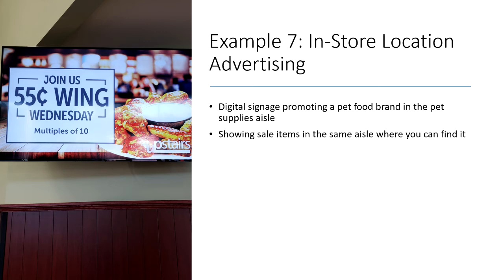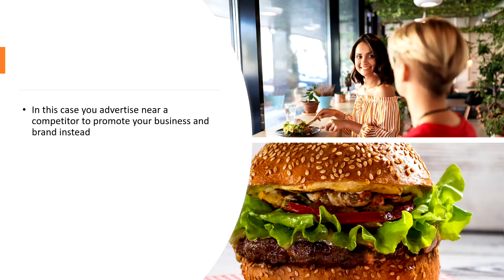Within a store you can also do location-based advertising. For example, digital signage promoting a certain brand of pet food in the pet supplies aisle, or showing sale items in the same aisle where you can find them. People already in that aisle are looking for that item, so you've got your prospects very close and you already know they need something there.